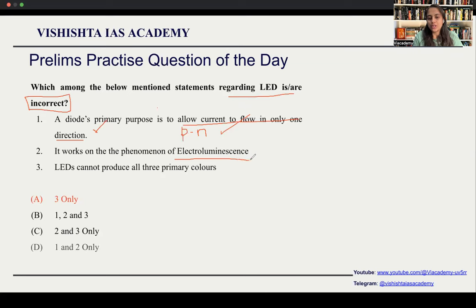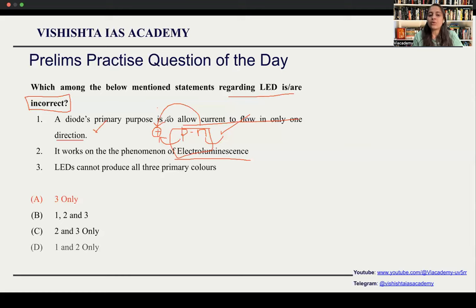The second statement is that it works on the phenomena of electroluminescence. What happens in the P-N junction is the N junction has excess of electrons and the P junction has holes where electrons were earlier present but now aren't. It is an empty space with a positive charge. The electrons travel from the N junction to the P junction whenever voltage is applied. When an electron meets a hole, energy is generated, and if the energy lies in the frequency of visible light spectrum, we see visible light — which is the light in LEDs. This entire phenomenon is known as electroluminescence, so the statement is also correct.